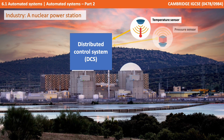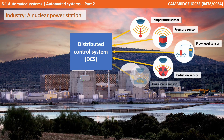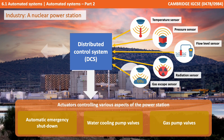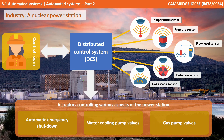For industry, let's consider a nuclear power station. These use highly automated systems controlled by what is known as a distributed control system, or DCS. They're constantly collecting vast amounts of input data from sensors such as temperature, pressure, flow, radiation and gas.